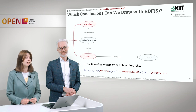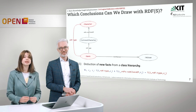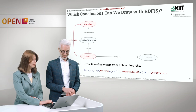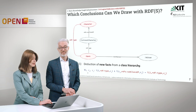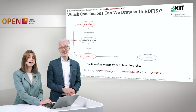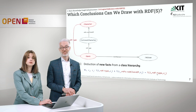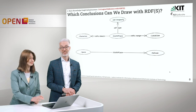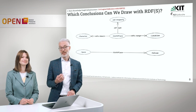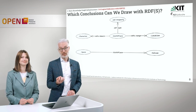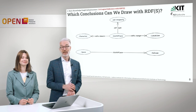Let's take a look at how we can deduce new facts from a class hierarchy. For all individuals I and for classes C1 and C2, if there is a triple that I is of type C1 and there is a triple that C1 is a subclass of C2, it follows that I is also of type C2. So that means we can infer a new triple — we can really conclude that more information is now available and we can make it explicit by inferencing it.